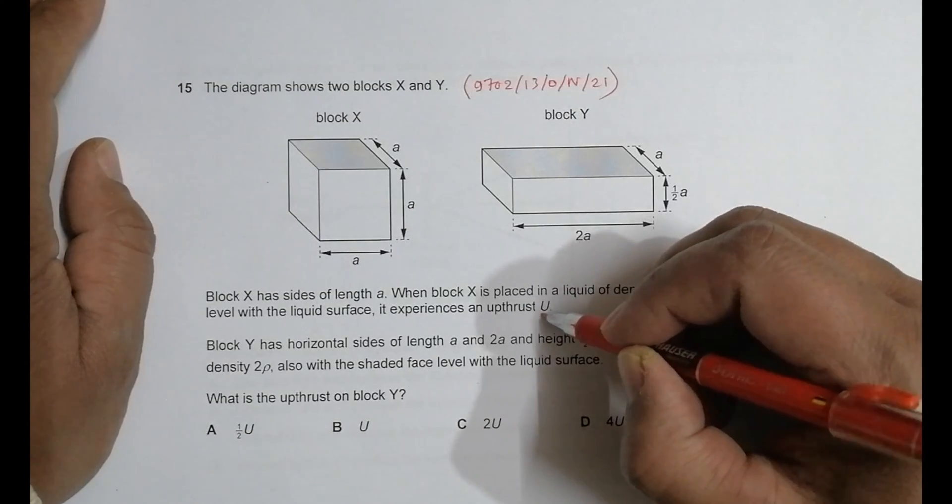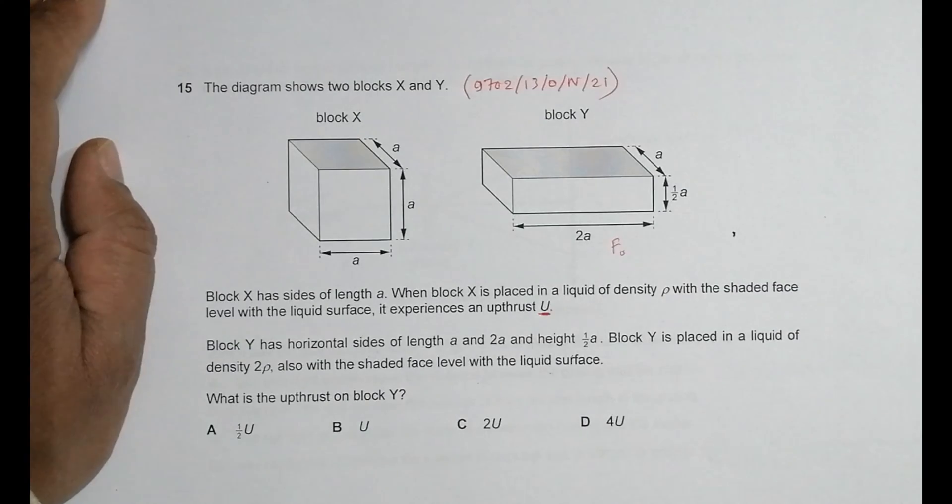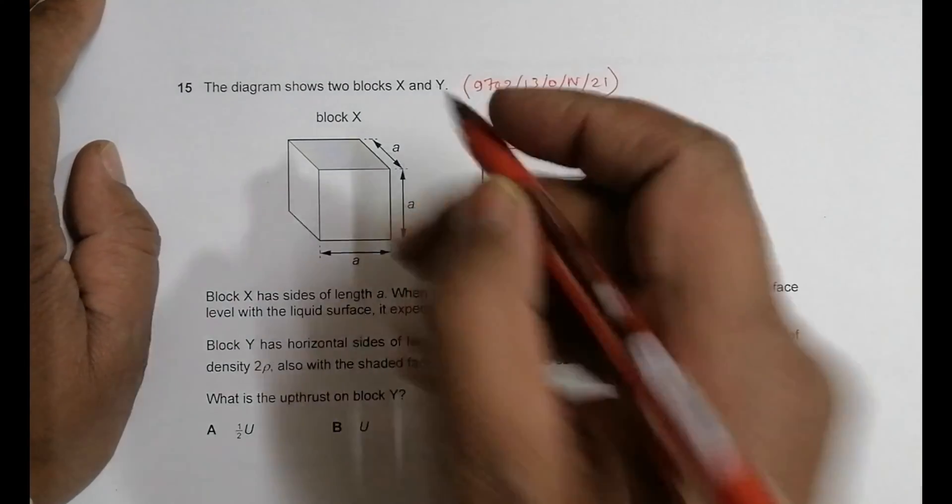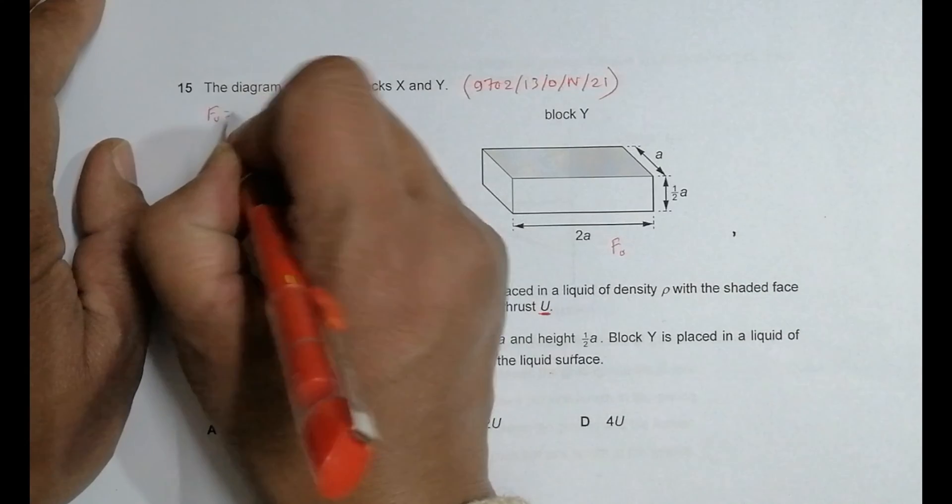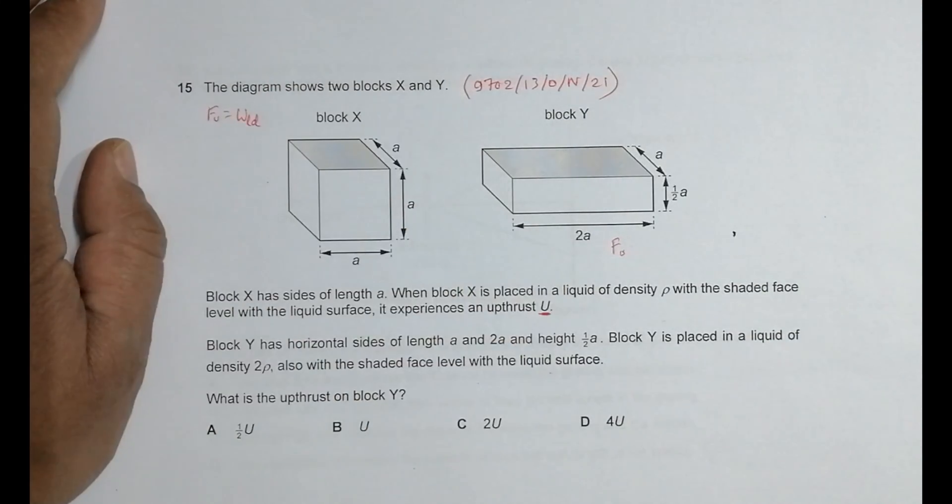For the first body, we have to find the force of upthrust. The upthrust force is equal to the weight of liquid displaced, which equals mass of liquid displaced times g, which equals ρ of liquid times volume of